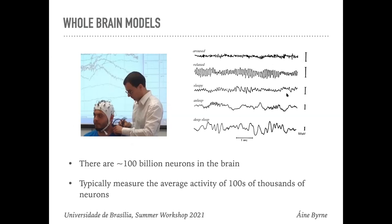When you put an electrode on the scalp, you see different waves or oscillations at different frequencies. Depending on what you're doing, the frequency differs: the more active you are, the higher the frequency — that's your aroused state. As you relax, activity slows down. In deep sleep, you see slow oscillations at scalp level.